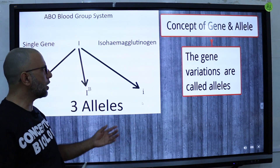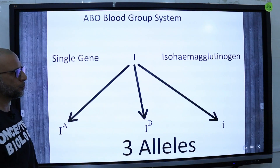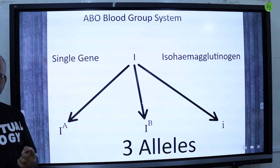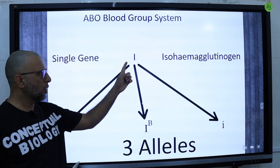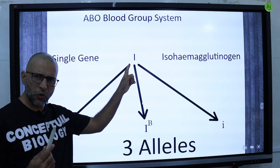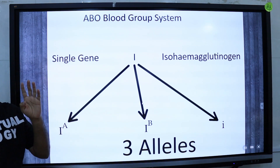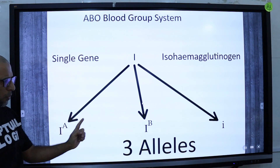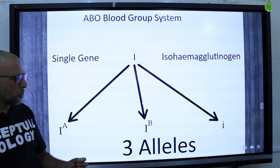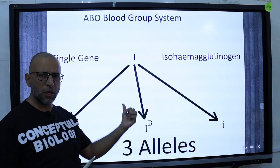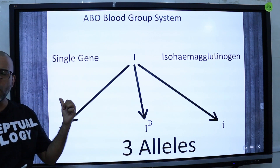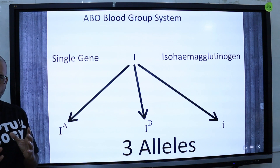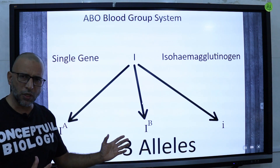Let's look at a simplified example: the ABO blood group system. The ABO blood group system is controlled by an autosomal single polymorphic gene I — gene I stands for isohemaglutinogen. This gene I has three versions, three alleles: IA, IB, and lowercase i. These three versions of the single gene I are called alleles, and four blood types result from various combinations of these three different alleles.